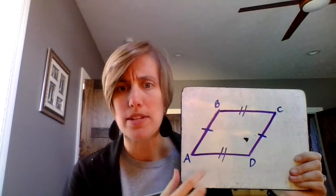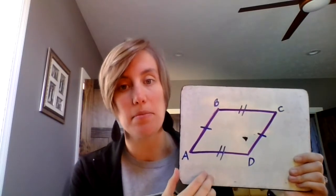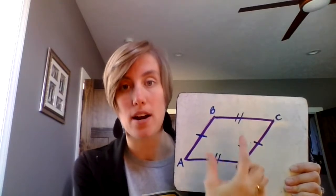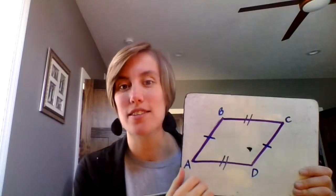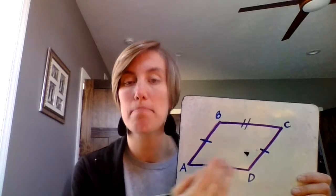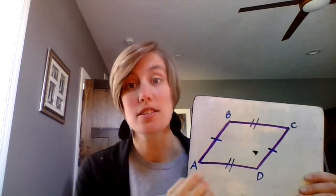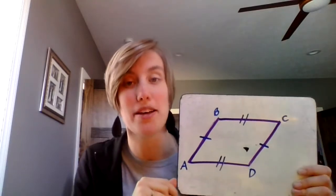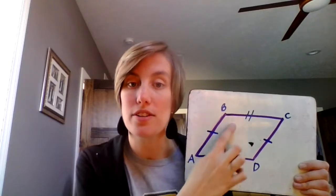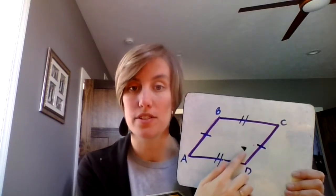Something new to our shapes here are these little tick marks. The tick marks on the line segments show that they have the same length. This tick mark and this tick mark are a pair — they match, meaning this line and this line are the same length. The same goes for these two. This line and this line are not the same length, regardless of what it looks like to the eye. So if one pair is four and another pair is three, the tick marks tell you which sides match each other.